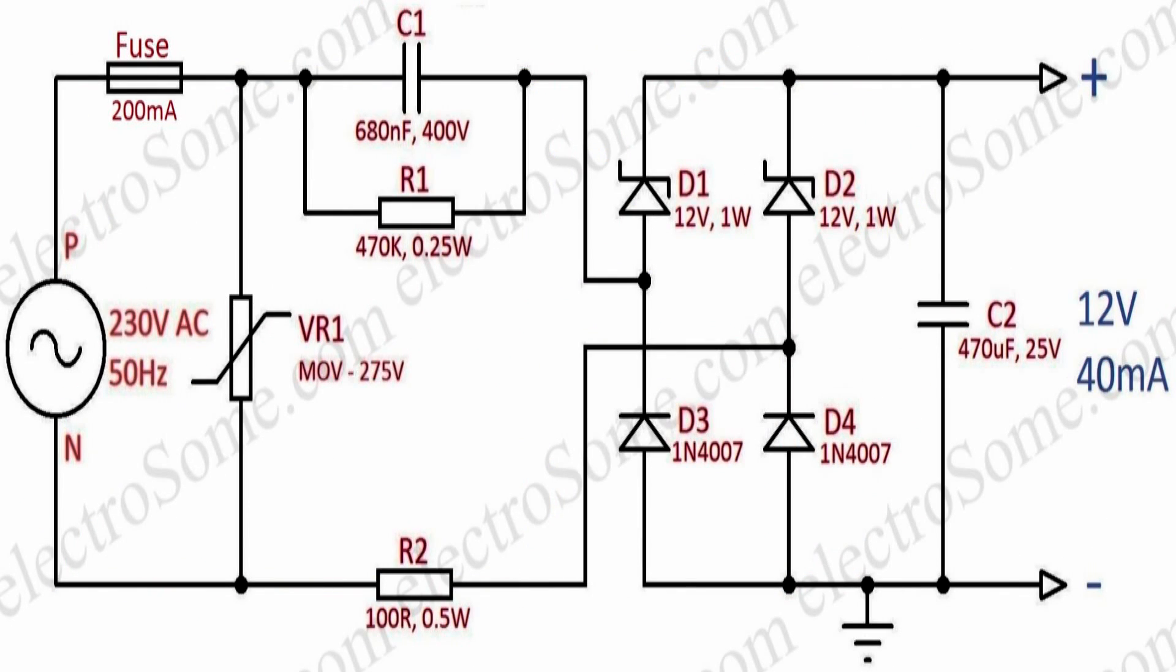This is the circuit of a 12 volt, 40 milliampere power supply. Actual values are 11.3 volt and 46 milliampere. Hope you understand how to design a capacitor dropper power supply.